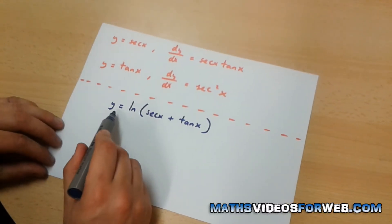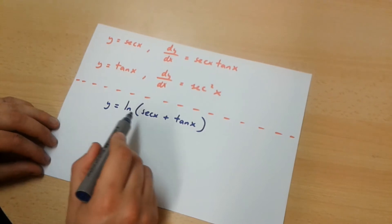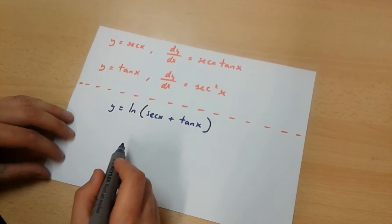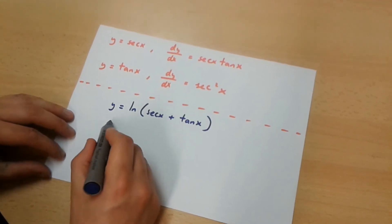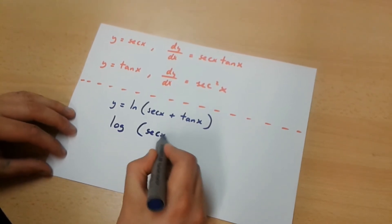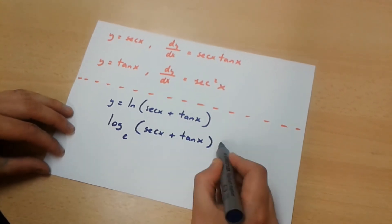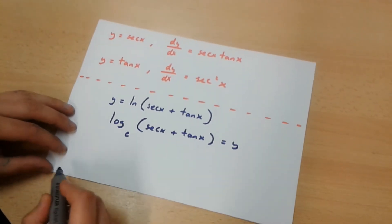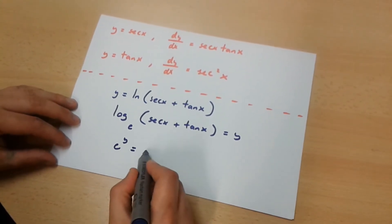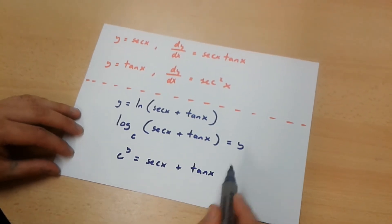In this video I'll be showing you how to differentiate y equals ln of sec x plus tan x. What we first have to acknowledge is that the logarithm of sec x plus tan x to the base e is equal to y. Therefore e to the power of y is equal to sec x plus tan x.